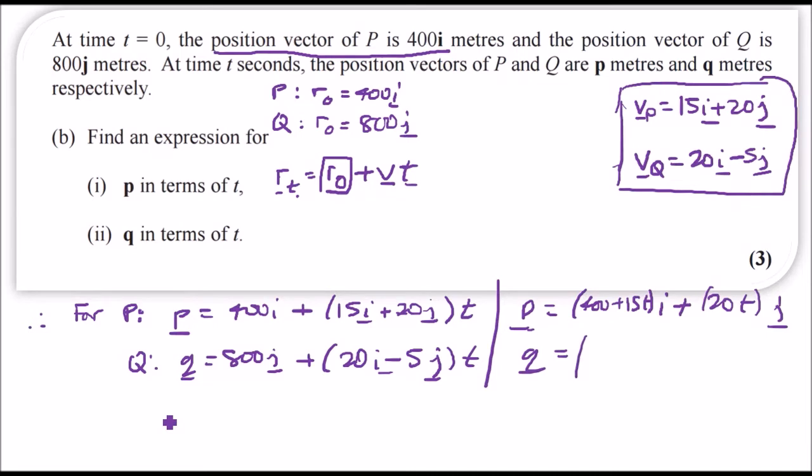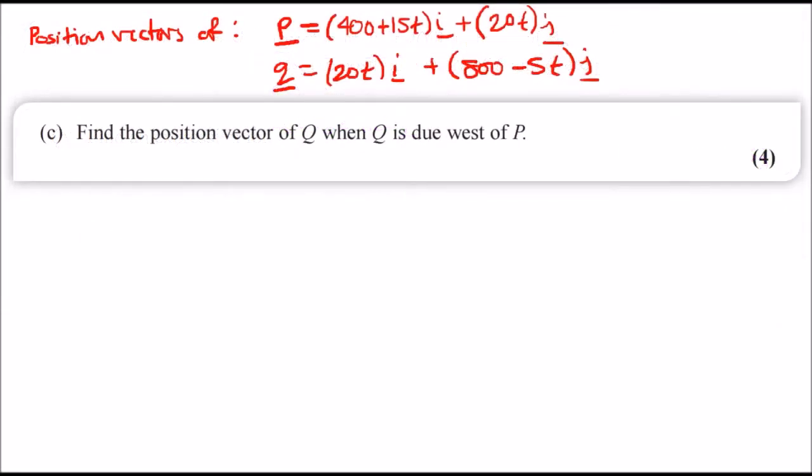For Q we're going to have 800j plus 20ti, so there's actually no initial i component, it'll just be 20ti plus bracket 800 minus 5t in the j direction. This is the official way to do things. Let's move on to part c.